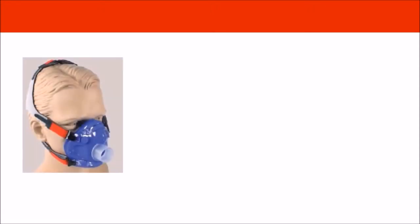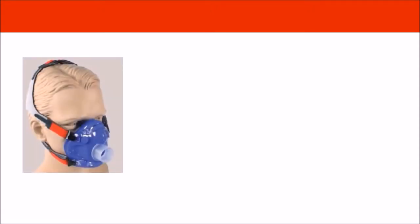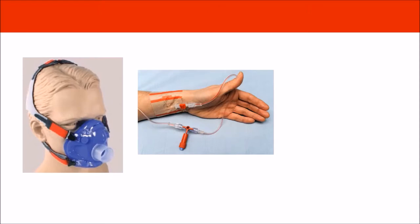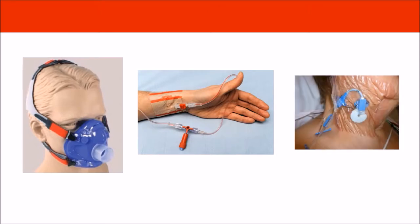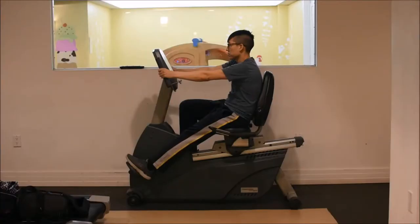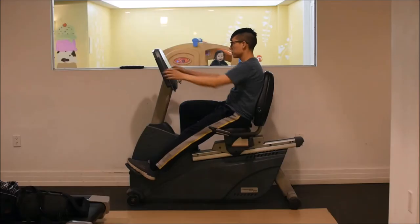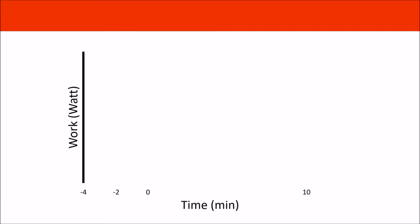The CPET has different levels. They all involve a mask for breath-by-breath analysis; some require an arterial line and sometimes central venous access. But today, we don't need any of this. Before we start pedaling, let's get everything attached and take a few readings as our baseline. This is called the rest phase — it takes about two minutes and helps you get adjusted to all the equipment.